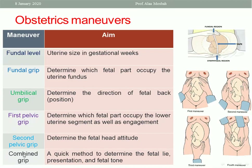Combined grip: used when the doctor is in a hurry and wants to know fetal lie and presentation quickly. One hand holds the lower uterine segment to feel which part of the fetus occupies that area, while the other hand holds the fundus to feel the opposite part. Both are assessed at the same moment to determine the presenting part and fetal lie.